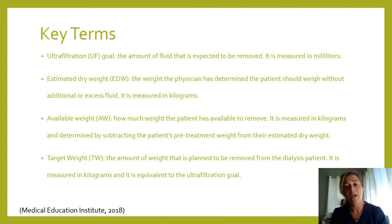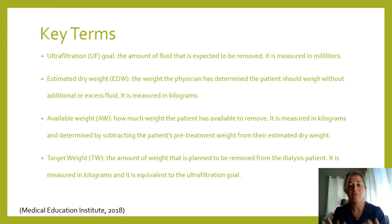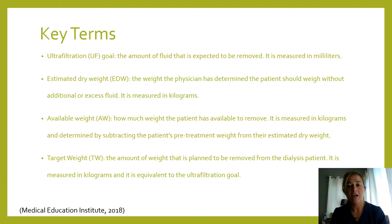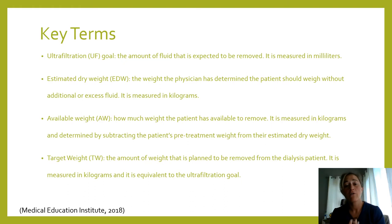The estimated dry weight is simply what the patient should weigh if they were dry — had no extra fluid — and this is determined by the doctor. Available weight is how much we have available to remove. For example, if a patient weighs approximately 70 kilos and the doctor says they should weigh 68 kilos, then this patient has approximately two kilos on them. Target weight is how much weight we actually intend to remove from that patient while they're on the dialysis machine.